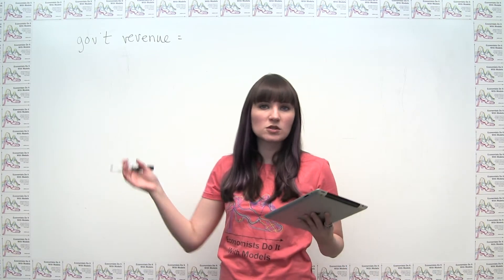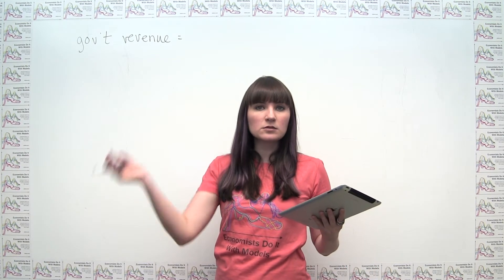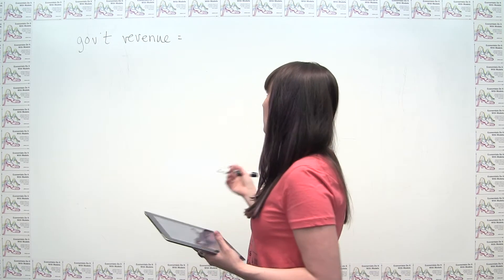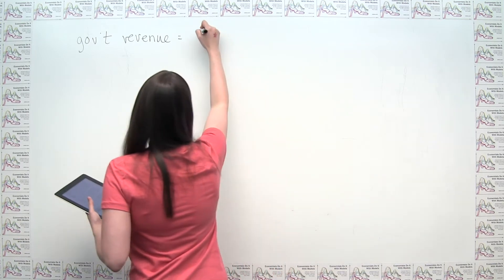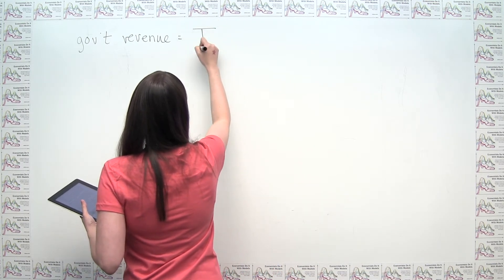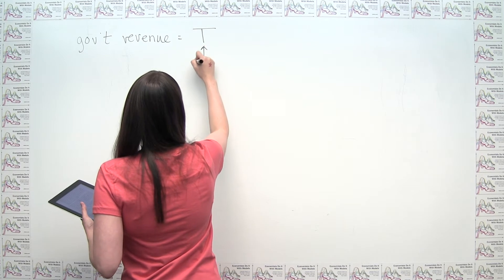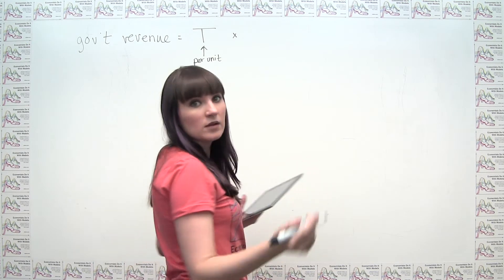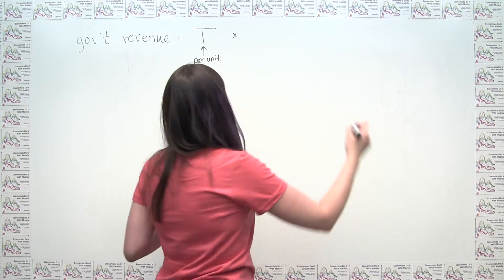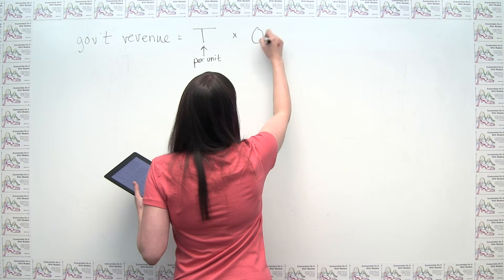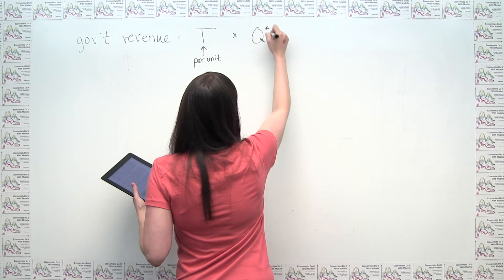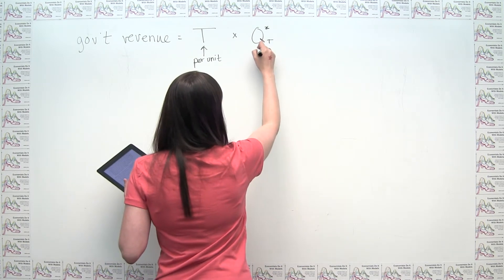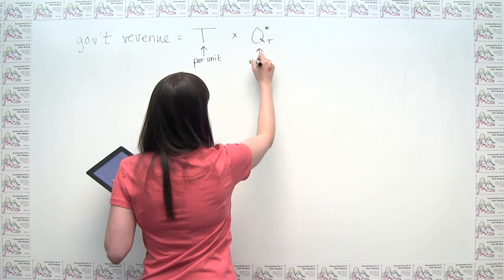Then we can just say it's just the per gallon amount times how many gallons are being bought and sold. So in a more general sense, we can say that the government revenue is the amount of tax per unit times the number of units sold, which in our terminology is just the equilibrium quantity in the market when the tax is in place. So call this q star sub t.